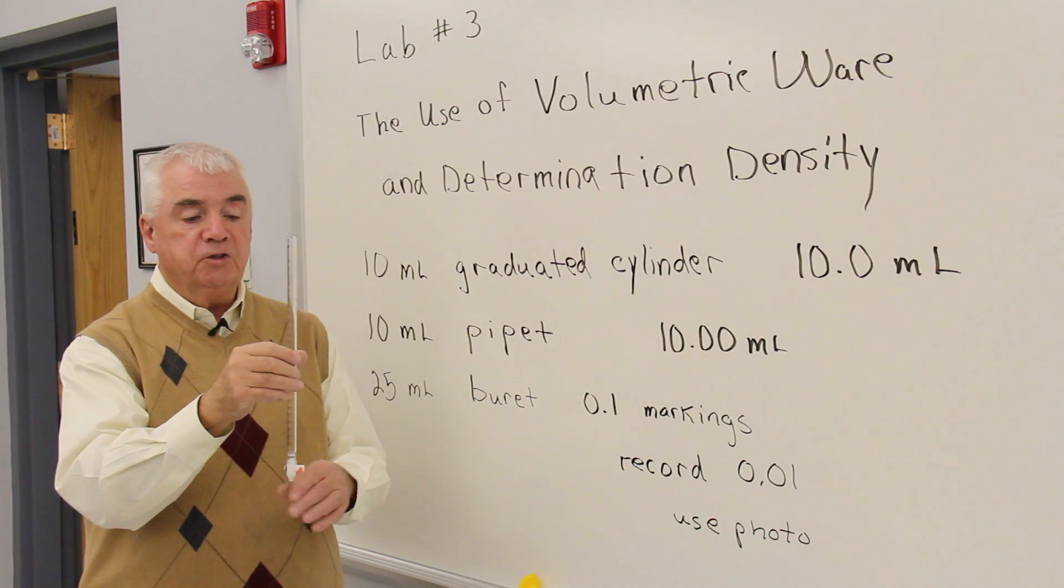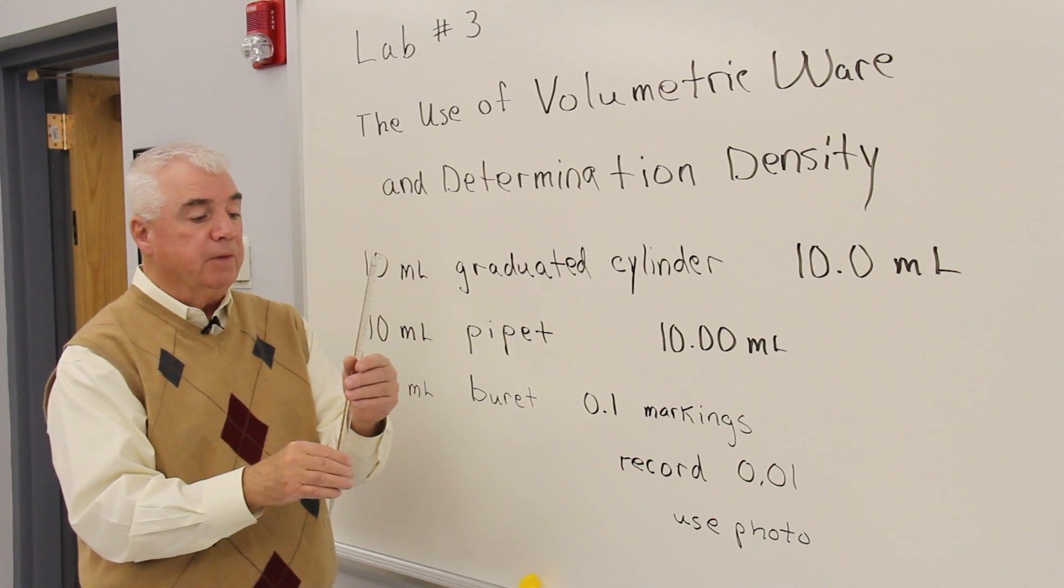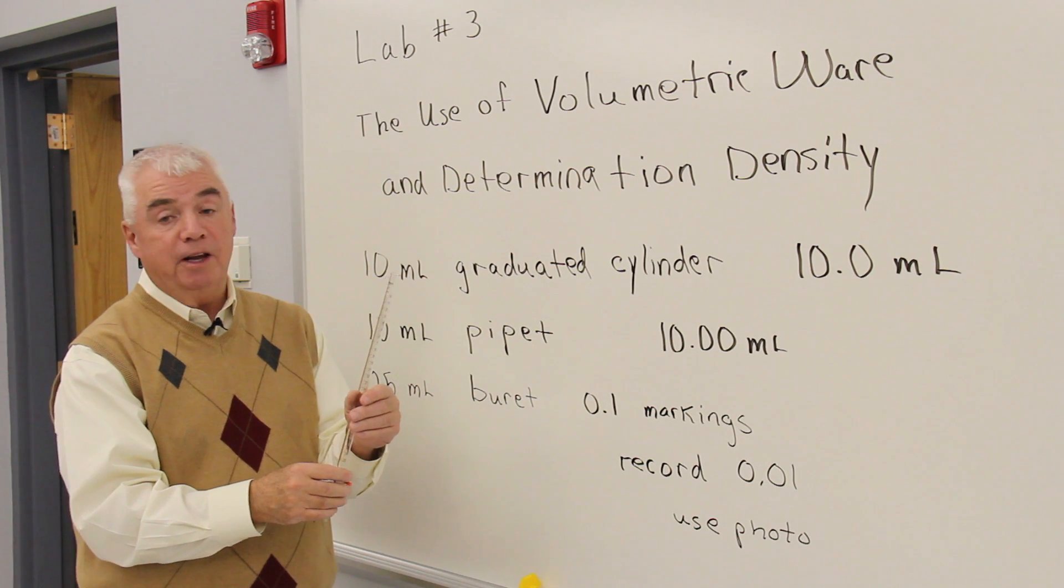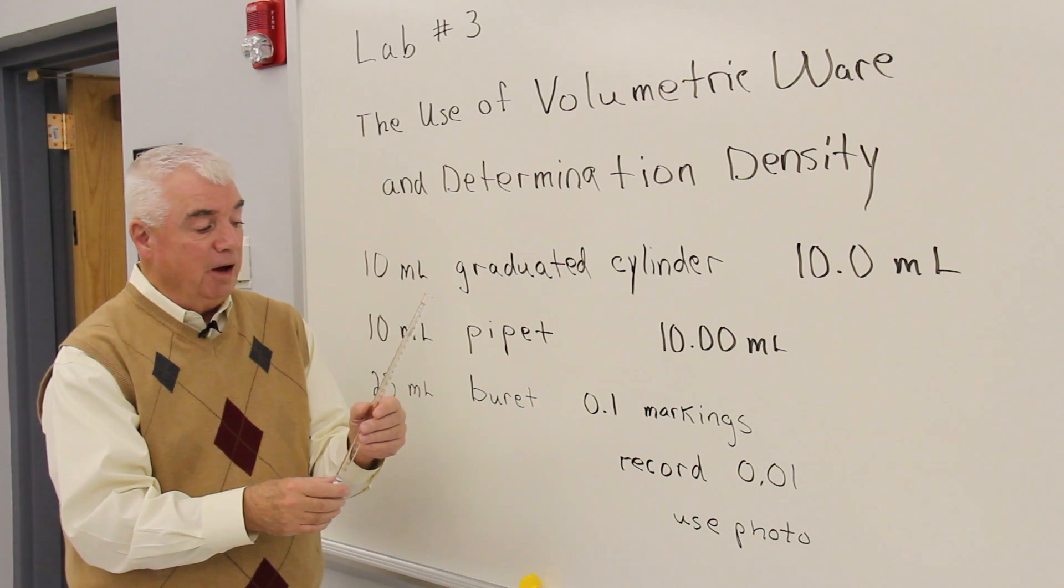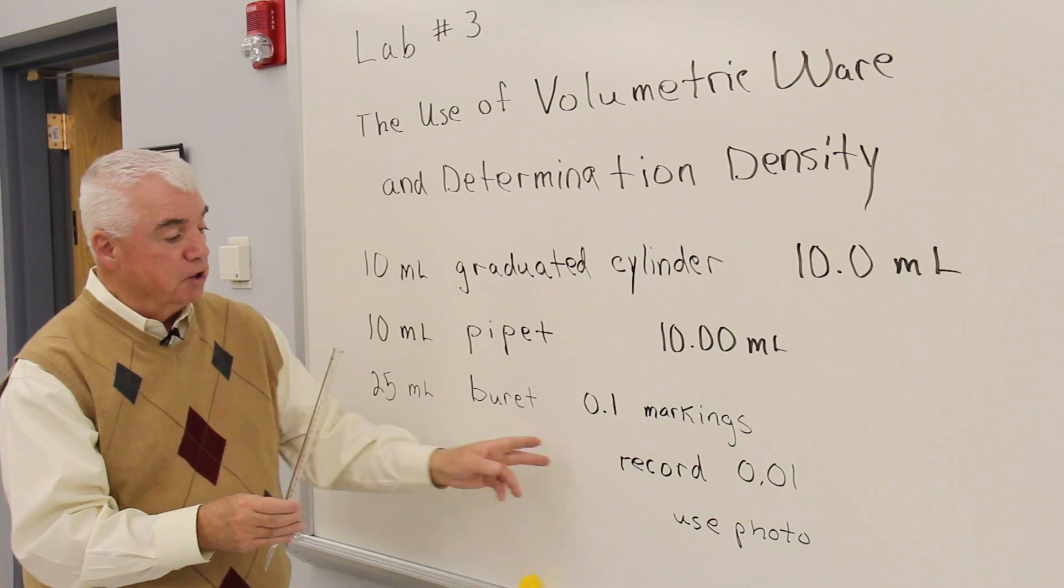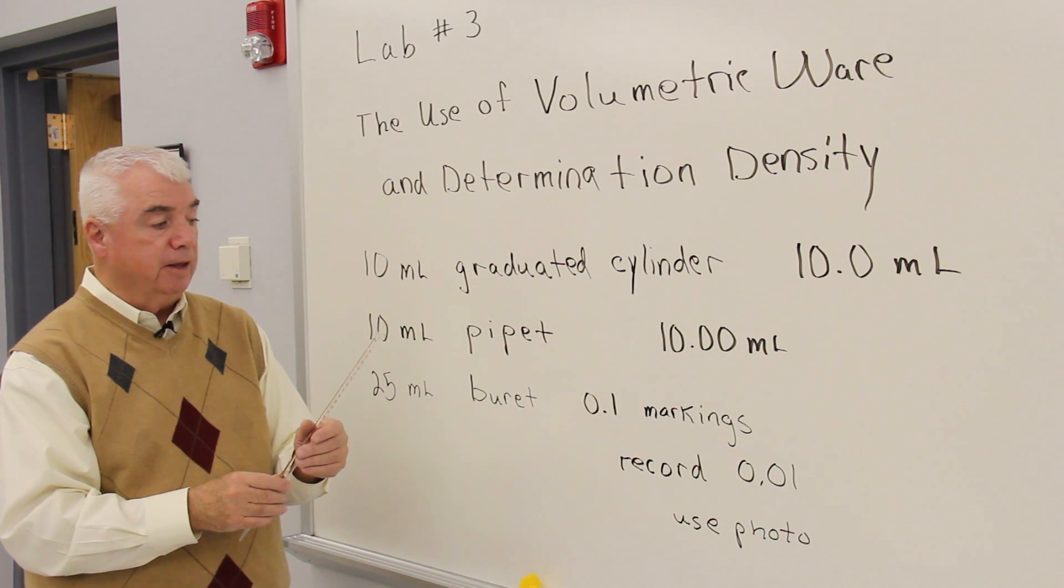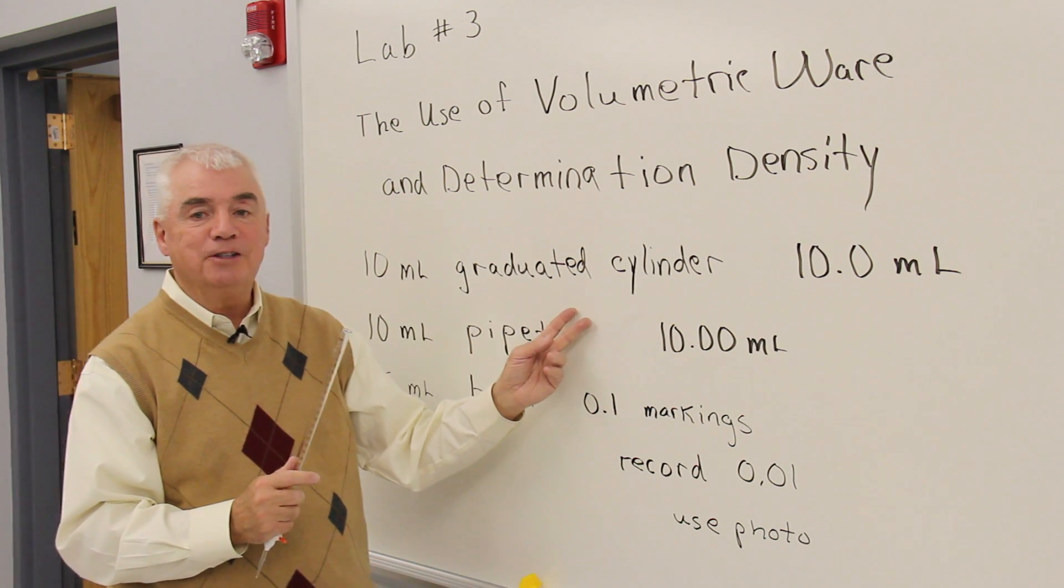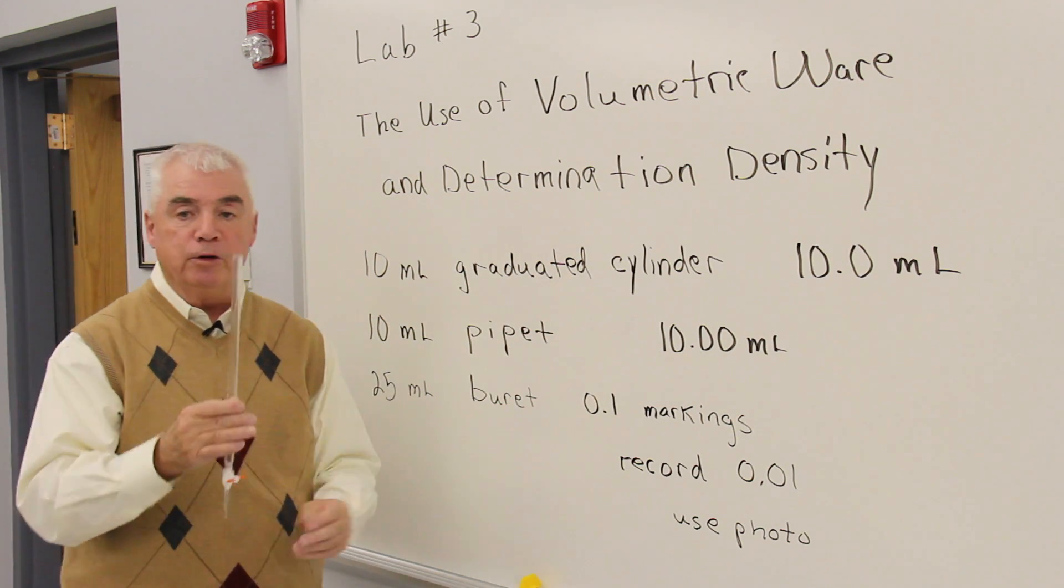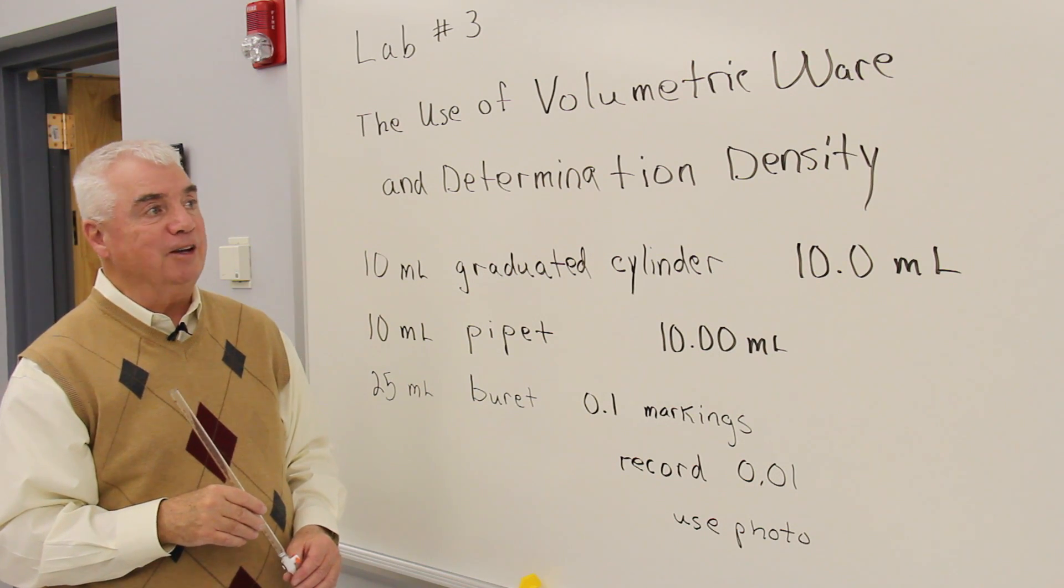The burette is designed to deliver variable volumes of liquid. It has markings to the tenth, so that means if we follow the rule, one more place than the number of markings is what we can estimate. So with the burette, we'd record to the hundredth. Up here in these two cases, the manufacturer told us what the accuracy is. Down here, we apply the rule of thumb one more place than the number of markings.